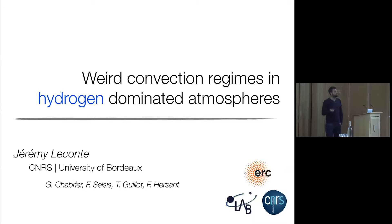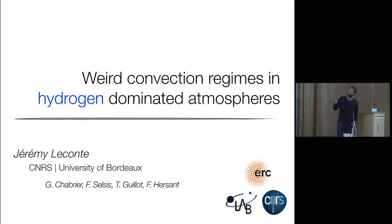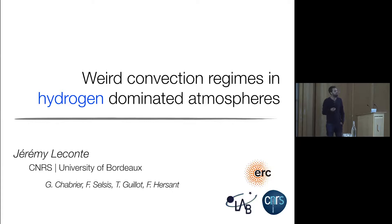If you want to apply convection to other planets, you need to think about what could happen if you change the gas involved. We could change the combustible gas, but we can also change the background gas — for example, hydrogen. Hydrogen or nitrogen is basically the same thing. It has the same structure and is not particularly radiatively active.